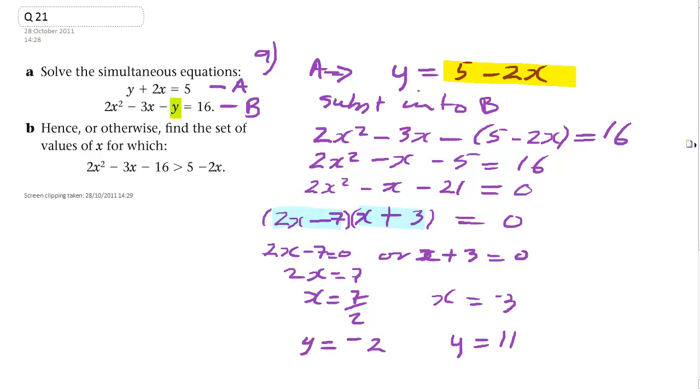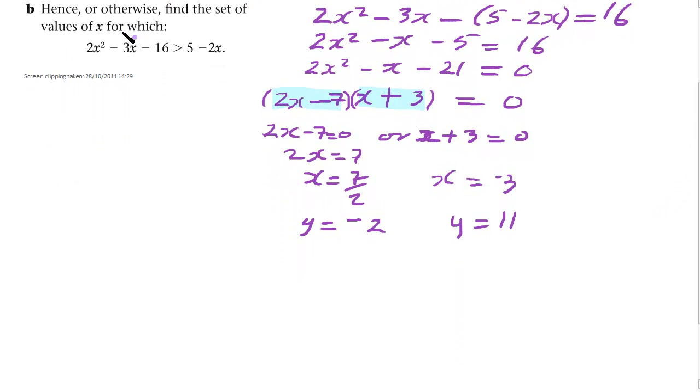Now, part B, we want to solve this inequality here. Let's look at this inequality. 2x squared. It says hence or otherwise. Well, I'm going to use a bit of hence on this. But first of all, we've got to be able to see what's going on.